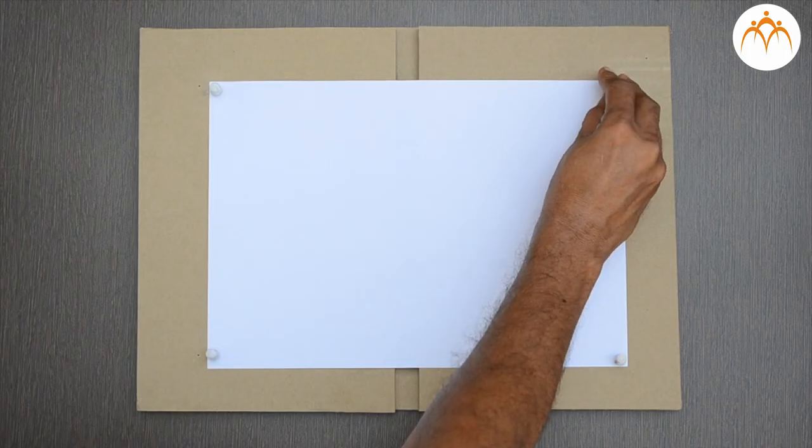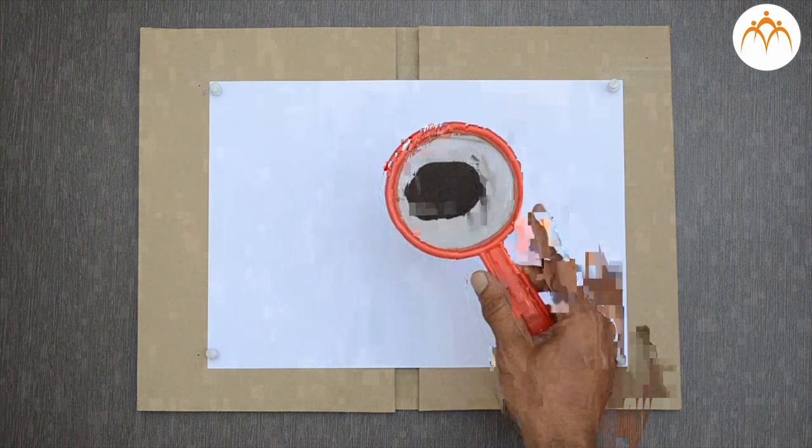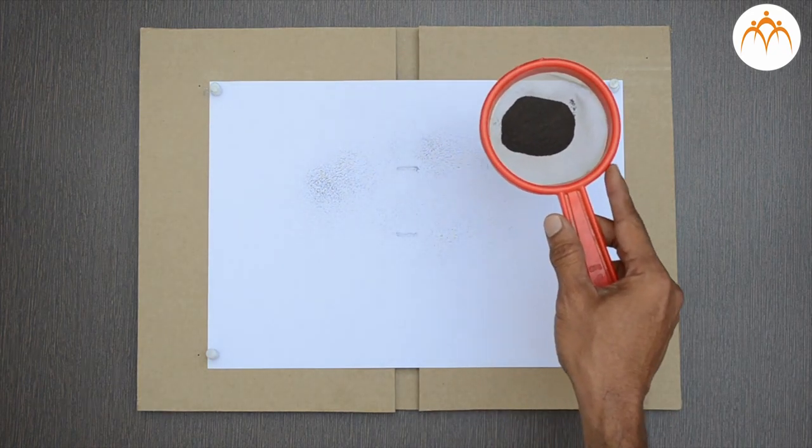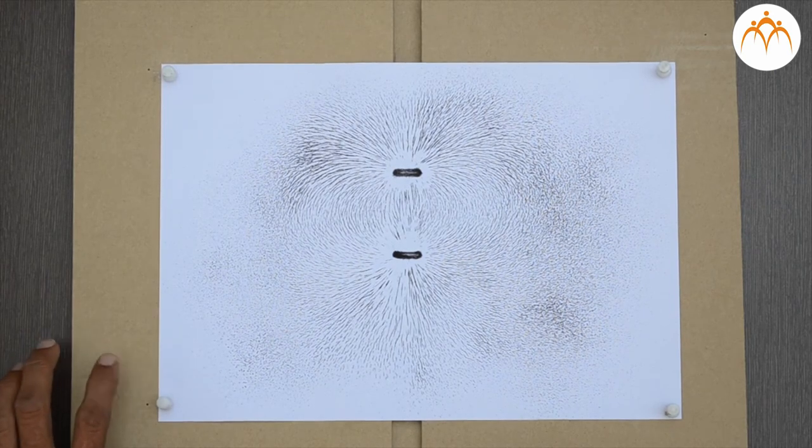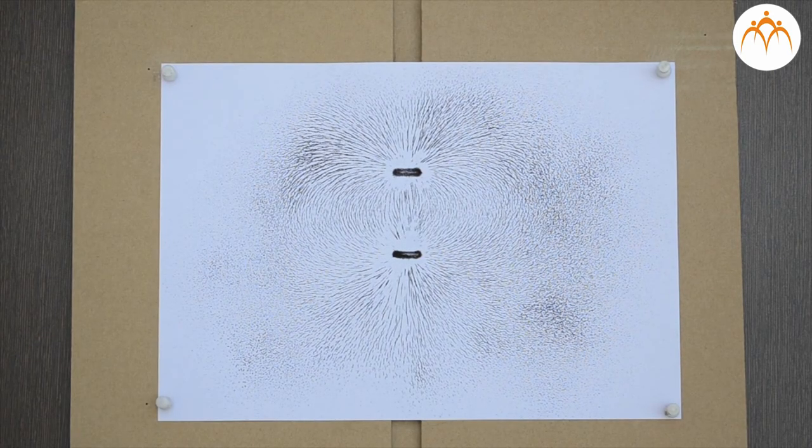If we sprinkle fine iron powder collected earlier, we can see nice line formation around north and south pole of the bar magnet placed under white paper. These lines are called magnetic field lines.